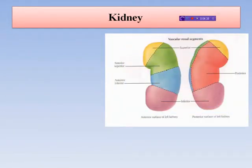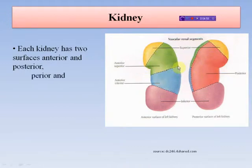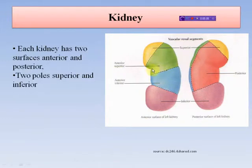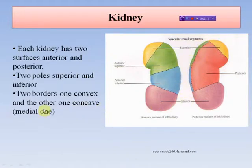Each kidney has two surfaces: anterior and posterior. It has two poles: superior and inferior. It also has two borders — one convex and another concave. The concave side is the medial side of the kidney.